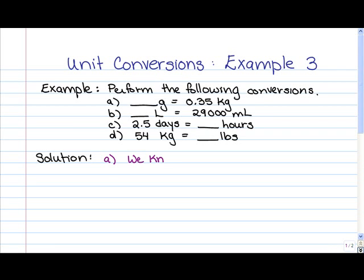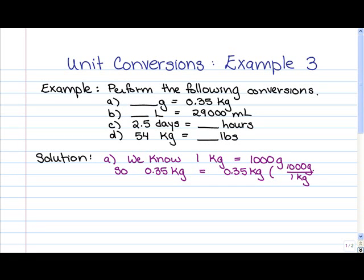So let's start with what we know. We know 1 kilogram is equal to 1,000 grams. So we have 0.35 kilograms. That's going to be equal to 0.35 kilograms times 1,000 grams in every kilogram. So if we multiply this together, what we end up with is 350 grams. Does this answer make sense? Well, it does, because we know that a kilogram is larger than a gram.